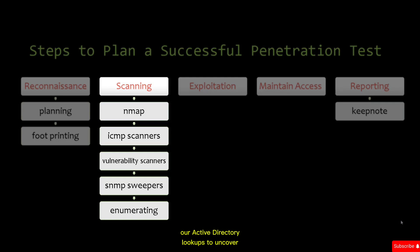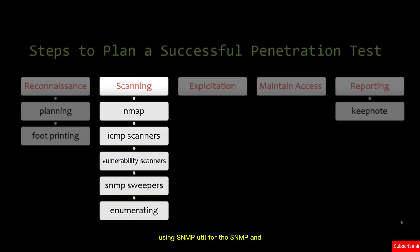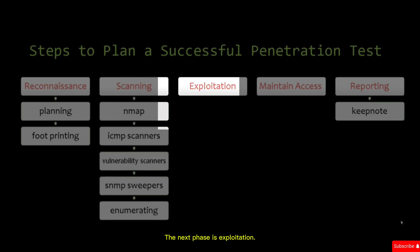Tools used in the enumeration sub-phase include Active Directory lookups to uncover vulnerabilities in users and groups, discovering the NetBIOS name with NBTscan — which we'll see in upcoming videos — using SNMP Util for SNMP, and employing Windows DNS queries along with establishing null sessions and connections.